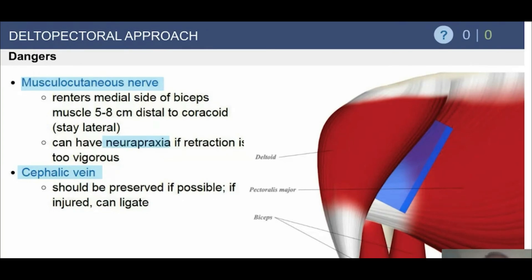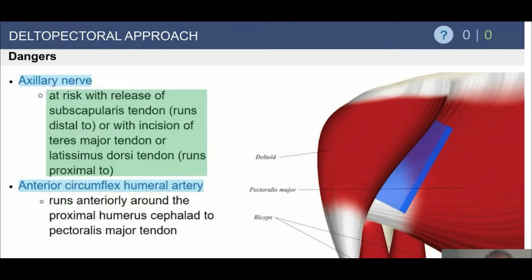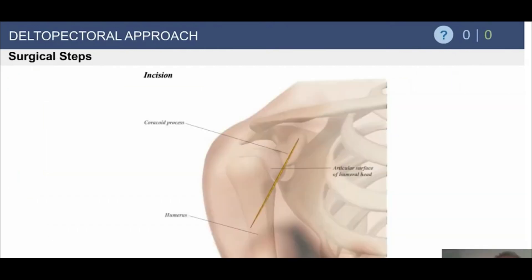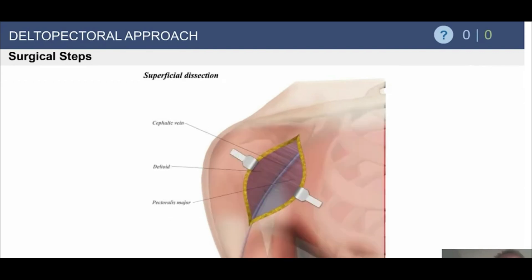The cephalic vein should be preserved if possible, though more often than not we ligate it because it gets in the way, and it's better to ligate it directly than have it tear during the procedure. The axillary nerve is obviously at risk just by the subscapularis tendon, and we have to always be mindful of that. The anterior humeral circumflex artery and the three sisters run anteriorly and we coagulate those in virtually all procedures.